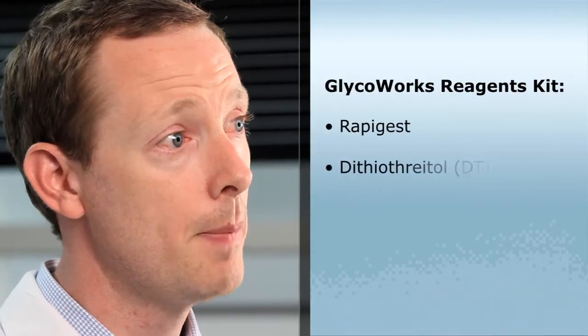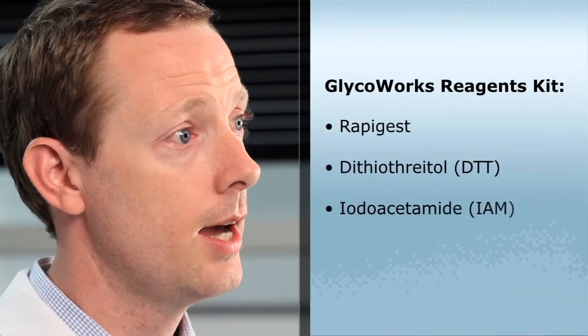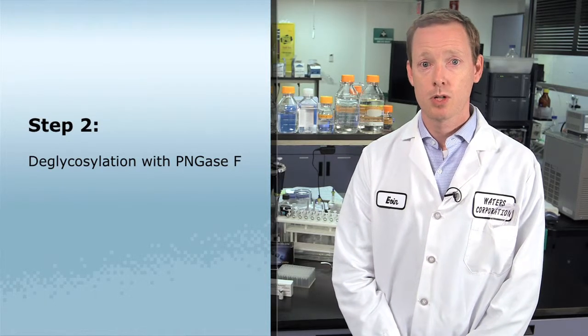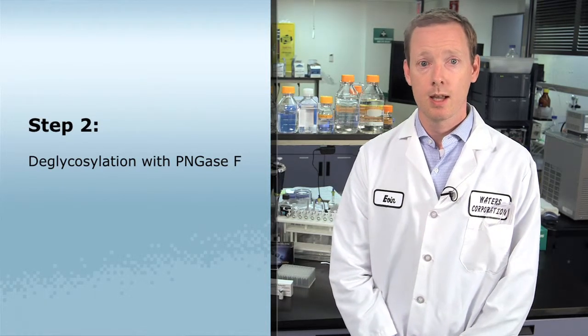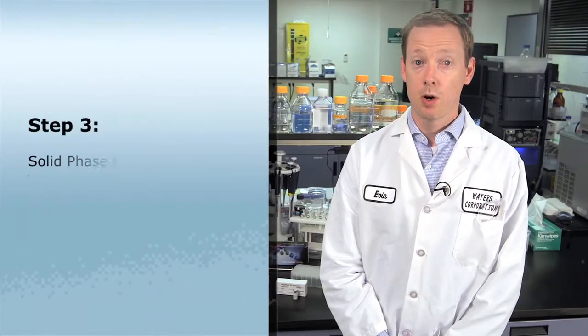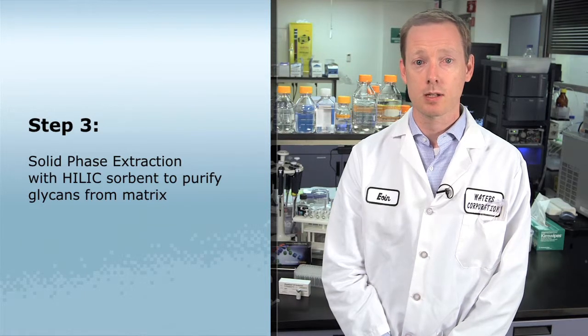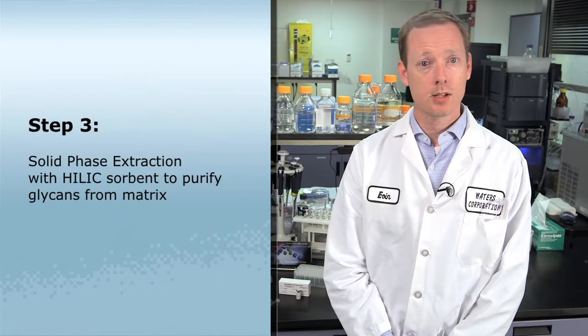In the GlycoWorks kit, three different reagents for this step are provided, including RapiGest, Dithiothreitol, and Iodoacetamide. After this step, the glycoprotein is subjected to deglycosylation with the highly specific enzyme PNGase F, which hydrolyzes the bond between the protein and the N-linked glycan. This reaction produces a mixture containing the released N-glycans as well as the corresponding deglycosylated protein and buffer constituents. These constituents can disrupt subsequent derivatization. Solid phase extraction, or SPE, is therefore employed to purify the glycans out of this potentially problematic matrix. A HILIC sorbent is used, given that glycans are highly polar.